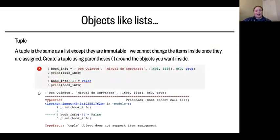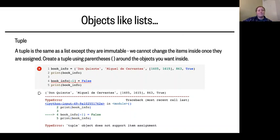There are a couple of other objects similar to lists. The first is tuples. A tuple is the same as a list except it's immutable, meaning we can't change the items inside once they're assigned. You create a tuple using parentheses instead of square brackets. If you try to replace an item, Python prints an error: 'tuple object does not support item assignment.'